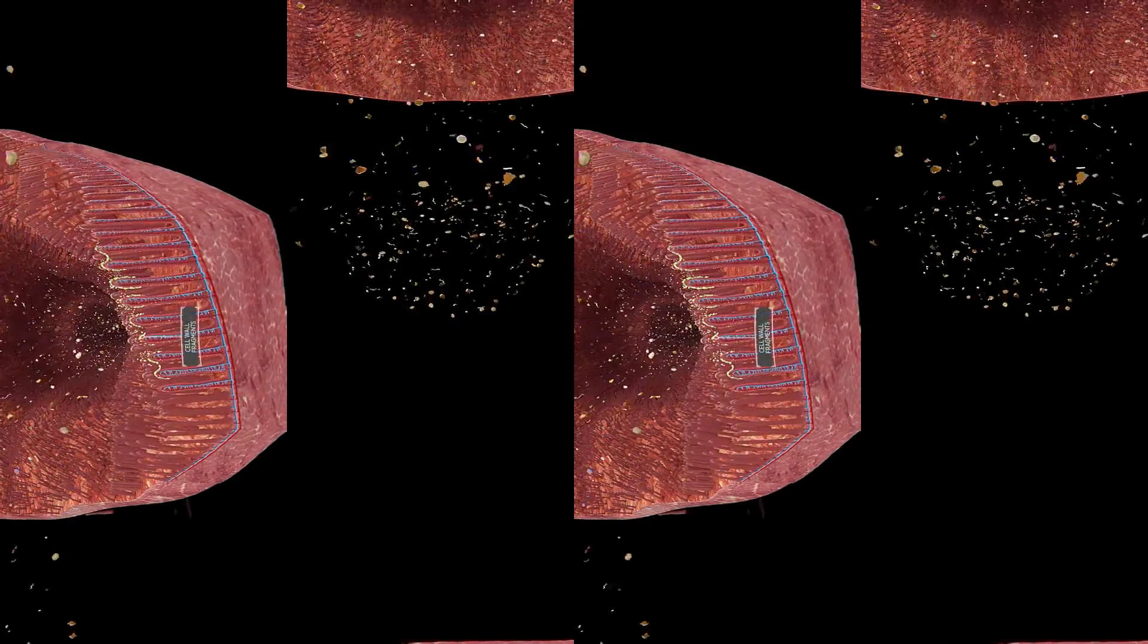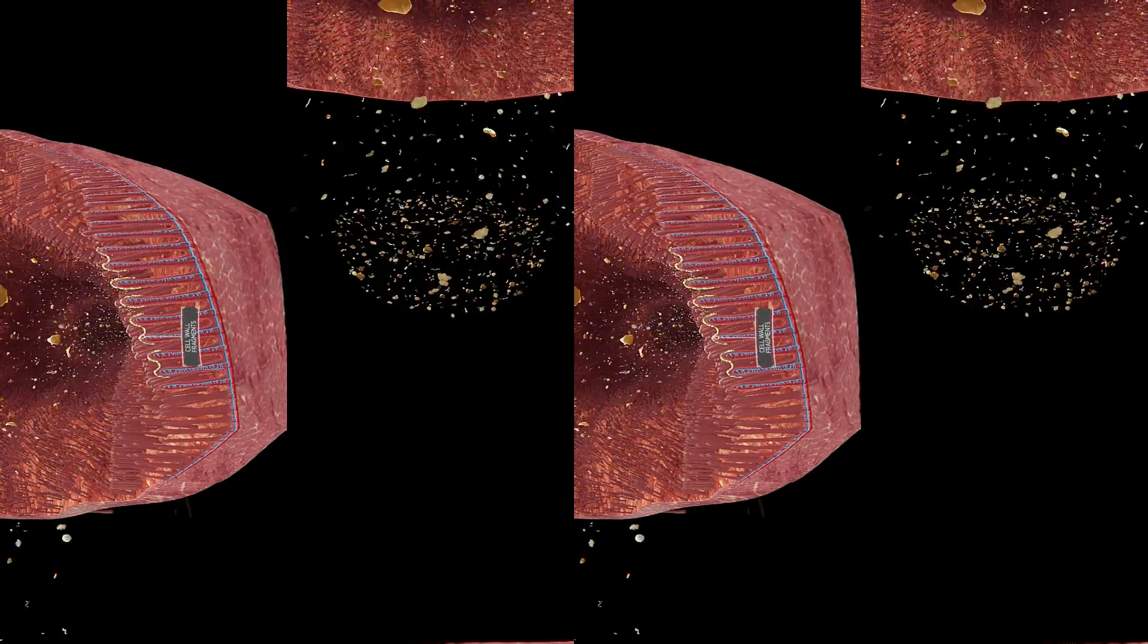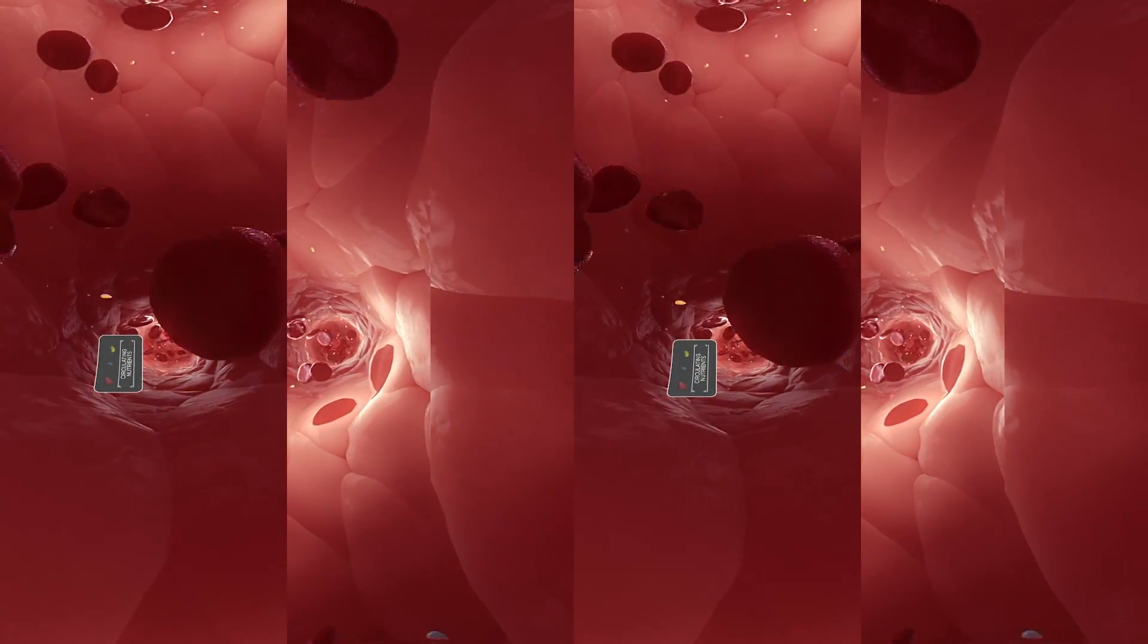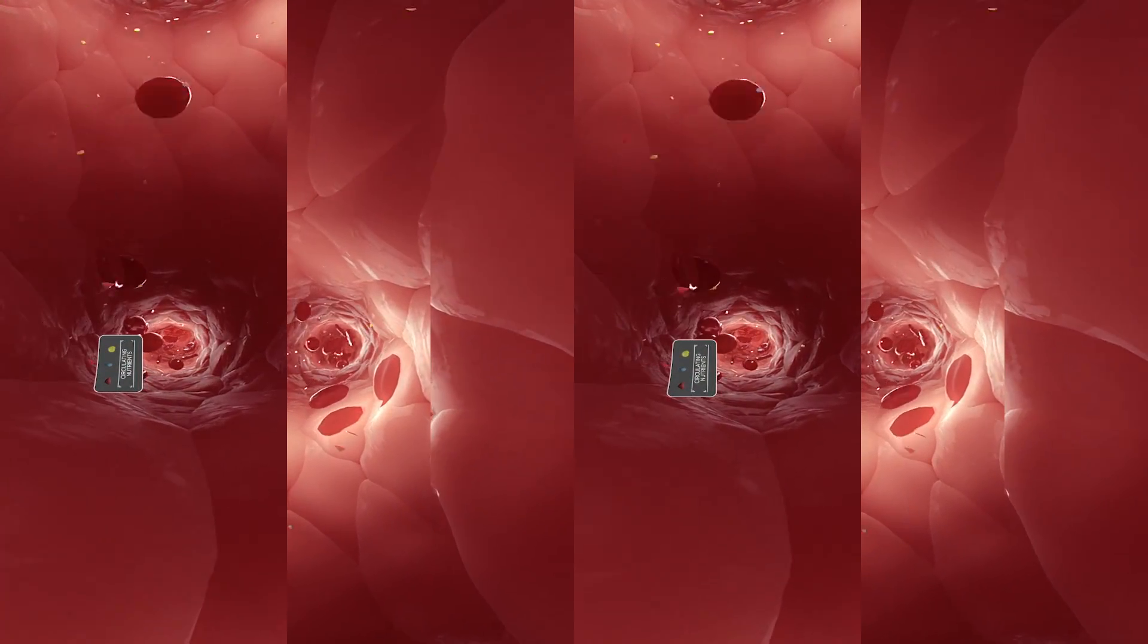The accumulation of bacterial cell wall fragments on the surface of the gut wall interfere with its capacity to absorb nutrients into the bloodstream, reducing digestibility and therefore feed efficiency.